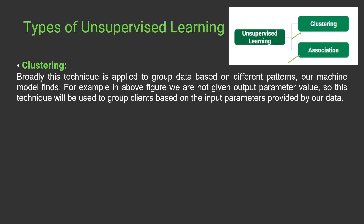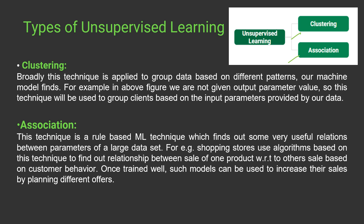Based on the approach, we have two types of unsupervised learning: clustering and association. In clustering, we group data based on different patterns without any predefined labels. In association, we combine datasets and find patterns — for example, shopping stores use association-based algorithms to find relationships between the sales of one product with respect to another, based on customer behavior. A project on this is included in the course.